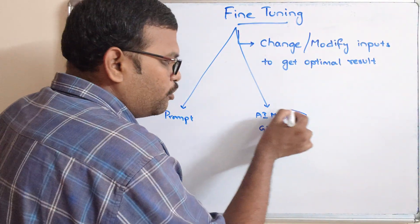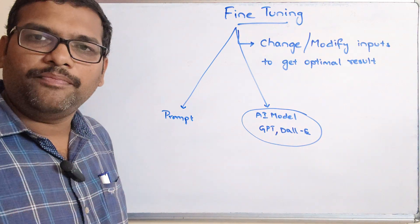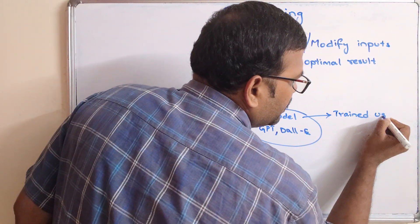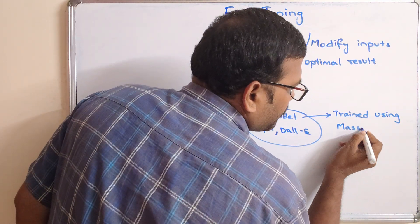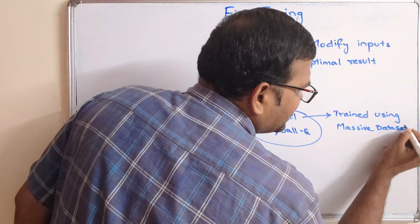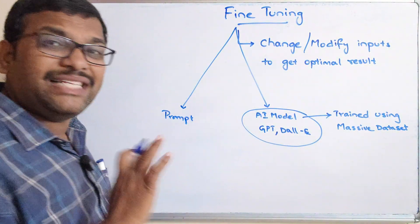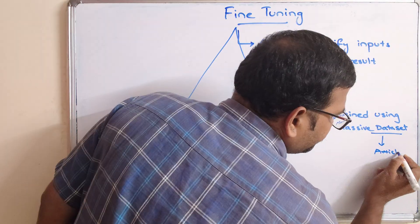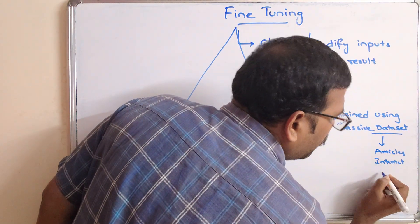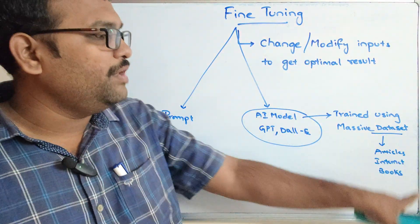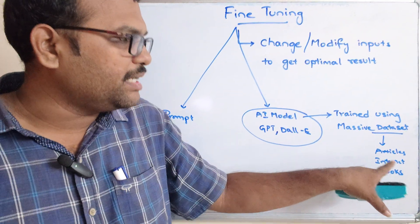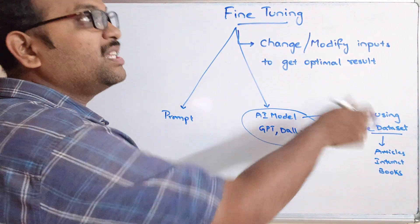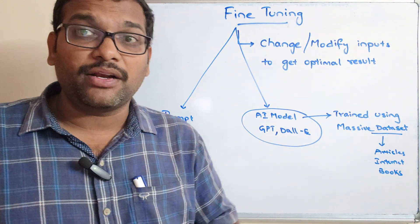Now we will be seeing about fine tuning of the AI model. We know this AI model is being trained using a massive dataset - a very large dataset. This dataset will be collected from articles, the internet, or books. This model which was already trained using this massive dataset may not give the optimal results for every prompt.